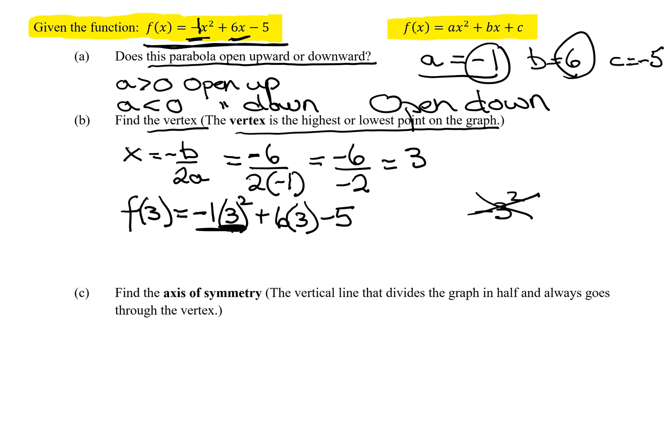So don't write it this way. This method here is a lot easier. So it's negative 1 times 3 times 3 is 9, plus 6 times 3 is 18, minus 5. So it's negative 9 plus 18, minus 5. So negative 9 plus 18 is 9, 9 minus 5 is 4. So our vertex is at the coordinates 3, 4.